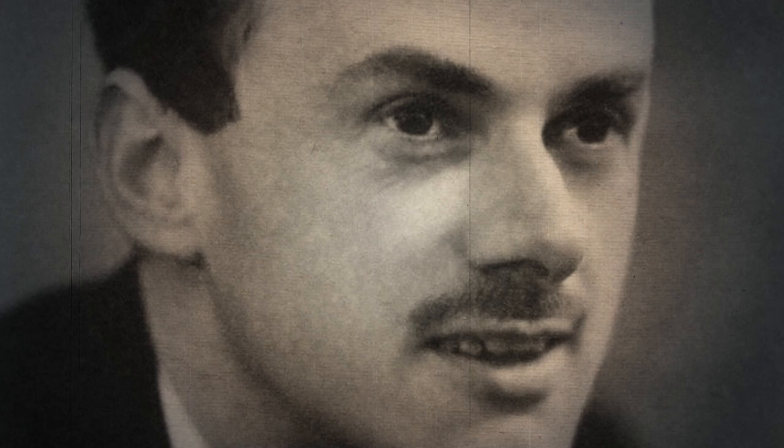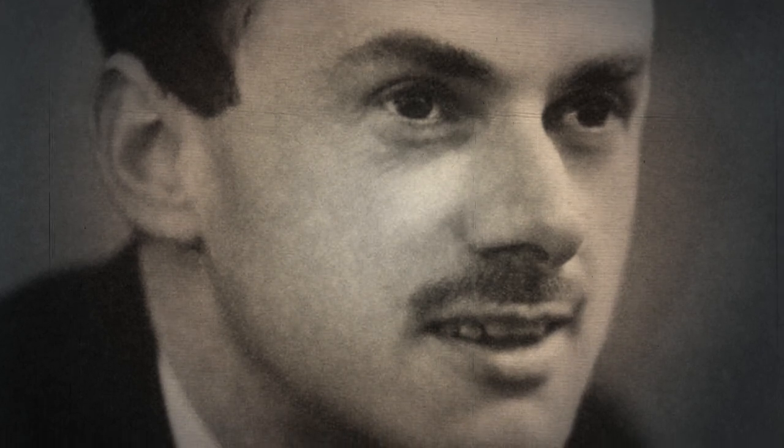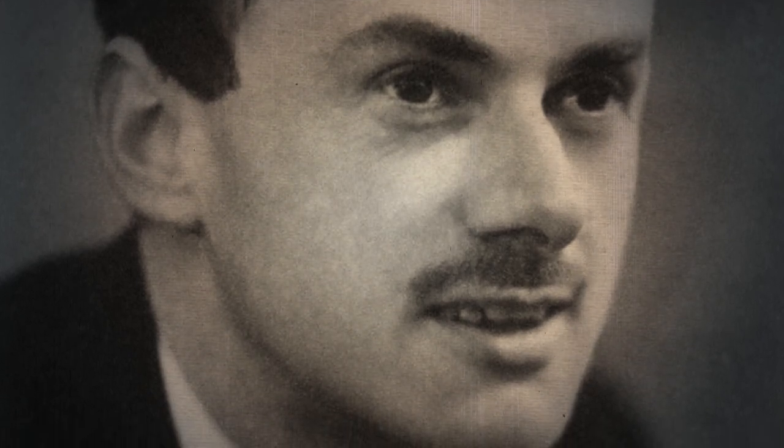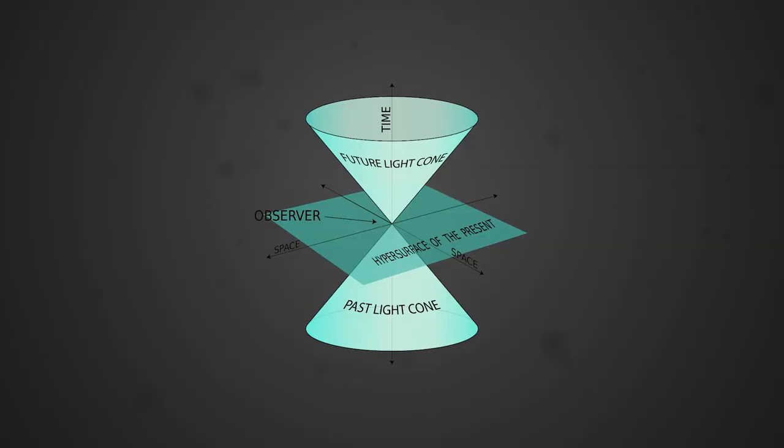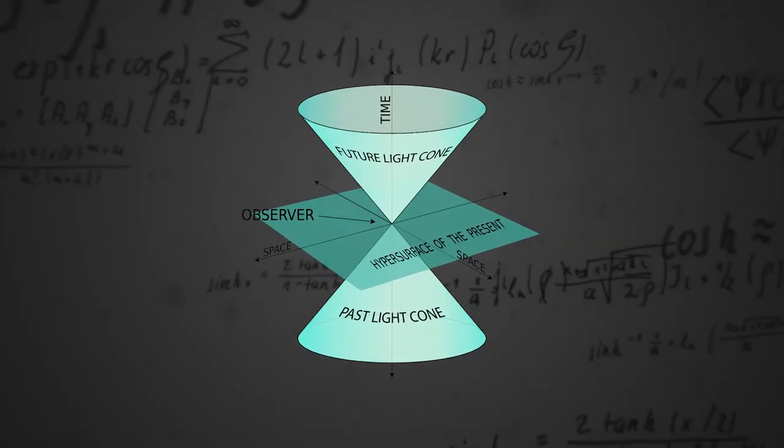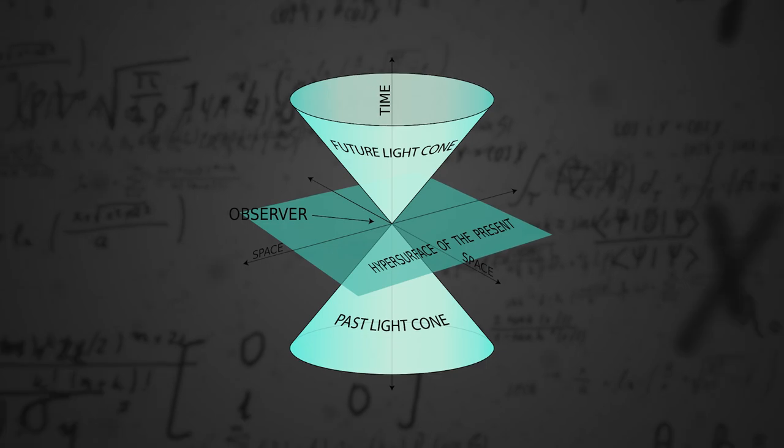Around the same time in Europe, Paul Dirac tried to formulate an equation that combined quantum mechanics and special relativity, and thus predicted the appearance of antimatter, which was later discovered in 1932.